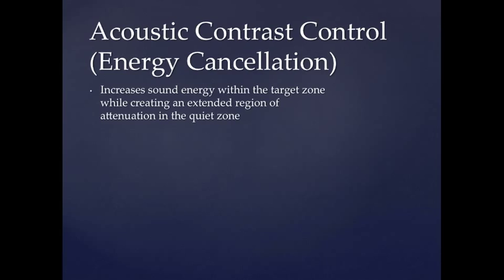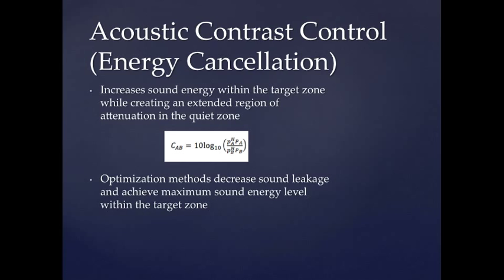Acoustic contrast control is a promising method that calculates the sum of squared pressures in both zones and uses the ratio between them to maximize the contrast between zones. Because acoustic contrast control minimizes the sound pressure level within the quiet zone, a feature that beamforming does not have, it is able to achieve excellent contrast between zones and surpasses the planarity of traditional beamforming approaches.